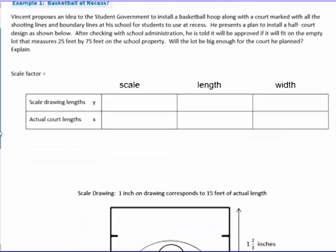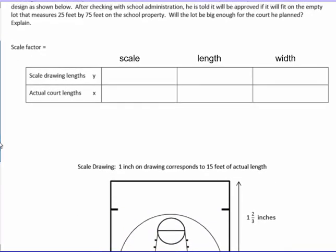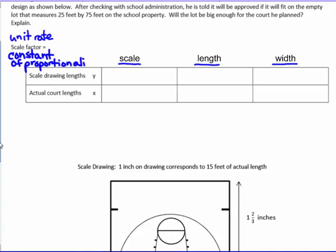We have a table here. You may or may not have the words scale, length, and width on your paper — please fill that in above the table. The first thing it's asking us to find is the scale factor, which is also called the unit rate, which is also called the constant of proportionality. They all mean the same thing in different contexts, and they're all looking for K.